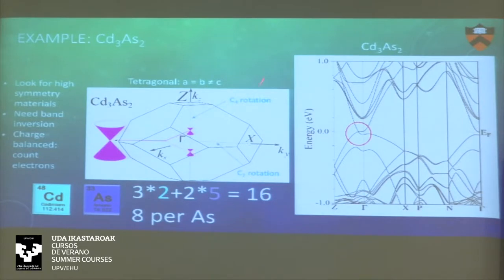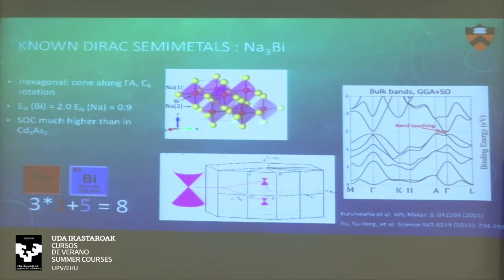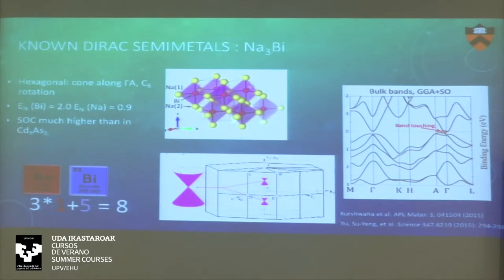We need some symmetry arguments for why this crossing is stable, and of course we need a high-symmetry material for these not to be gapped. We have the same story in Na₃Bi — you can count the electrons, they add up to eight with one bismuth. Again we have a very tiny band inversion between the filled shell and the next empty one. So this is the difference between using bonding strings and half-filled bands to create a direct semimetal, versus using charge-balanced clean materials.